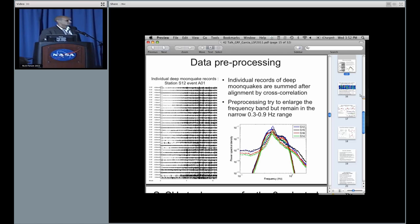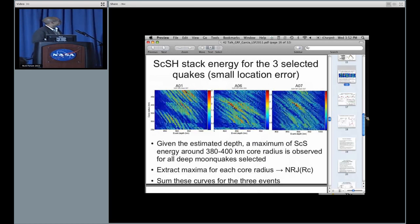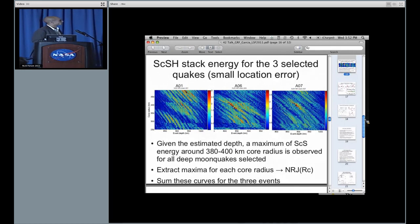Here is the result. What is plotted here is the energy in color inside the S core reflected window as a function of core radius and event depth, centered on the theoretical event depth. You see clearly that we have a strong correlation between core radius and event depth, but we still have a peak for these three events around 380-400 kilometers core radius.